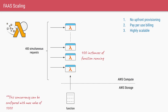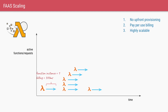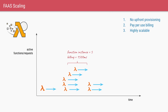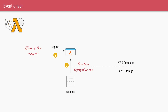From a timeline perspective, with a single request your single function instance runs and you are billed for 300 milliseconds. With multiple simultaneous requests — say five — you have five function instances running at the same time, charged at 5 × 300 milliseconds = 1.5 seconds, and so on. This provides immense cost efficiency as well as scalability, because you never pay for compute you do not use.